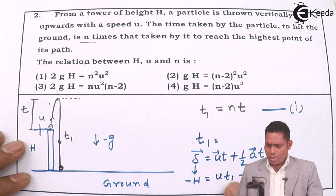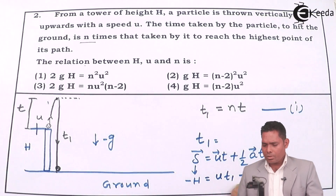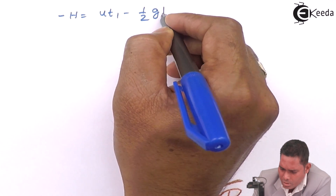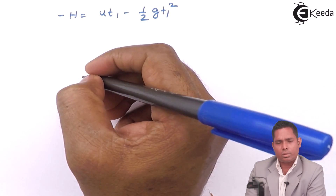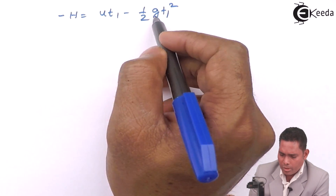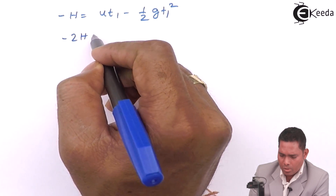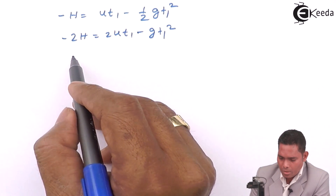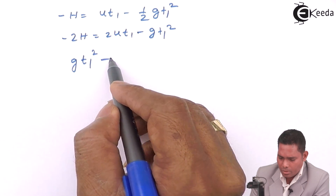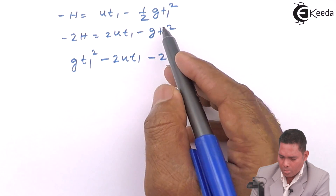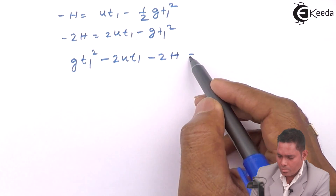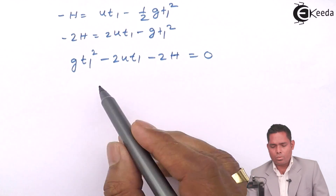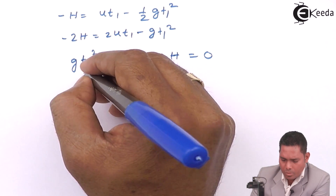Rearranging equation 1: multiply through by 2 to get minus 2h = 2u·t1 minus g·t1². Rearranging: g·t1² minus 2u·t1 minus 2h = 0. This is a quadratic equation of the form ax² + bx + c = 0, so we can find the roots using the quadratic formula.